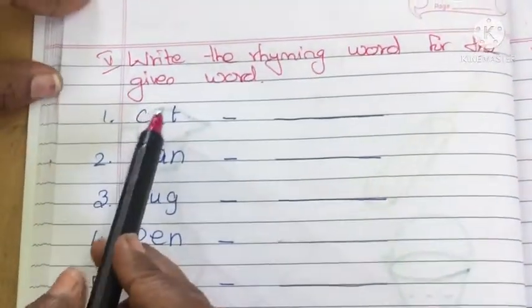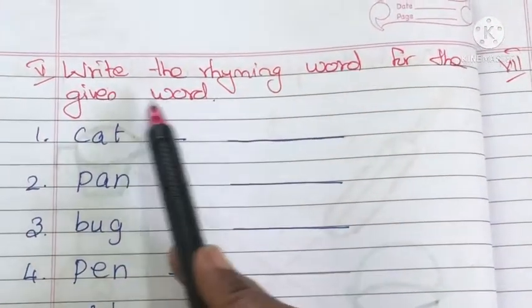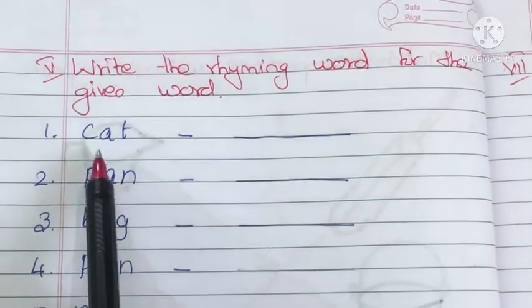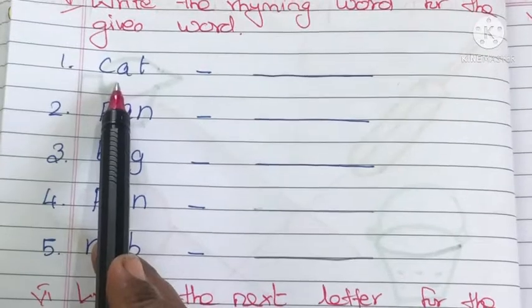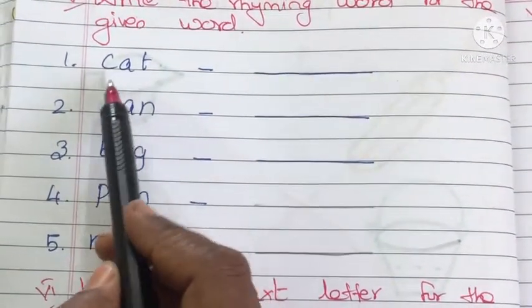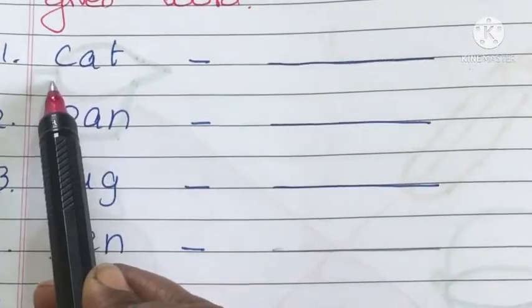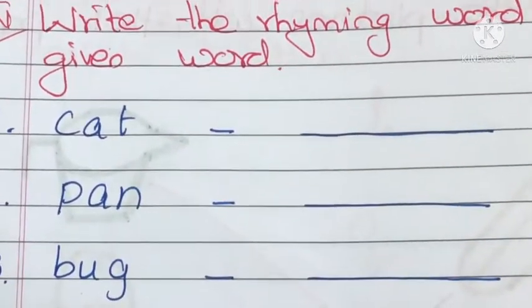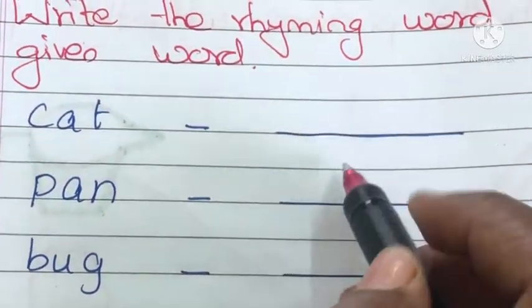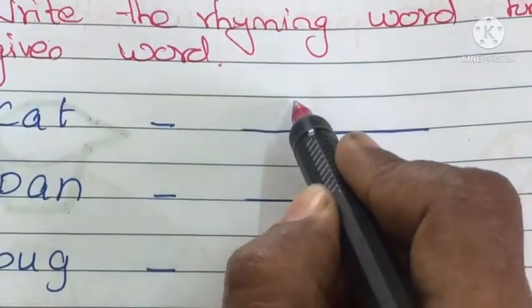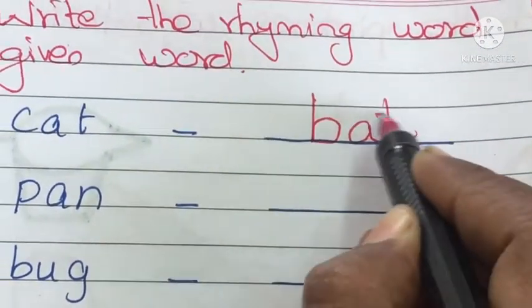See the next exercise: write the rhyming word for the given word. Here a word is given and we have to write the rhyming word for it. Read it — what is this? It is cat. What is the rhyming word for cat? We can write anything. Shall we write bat? Yes — cat, bat.